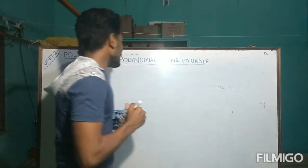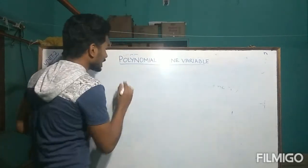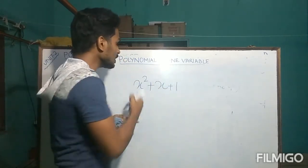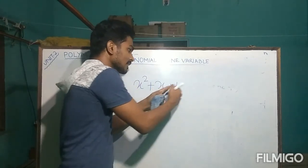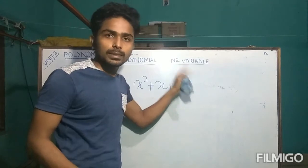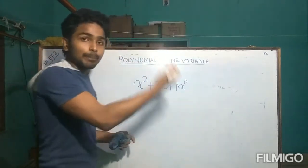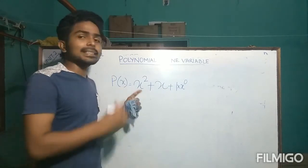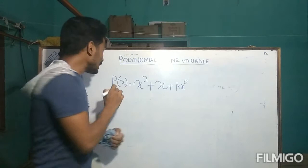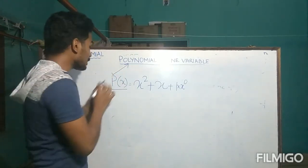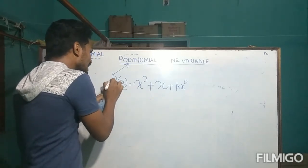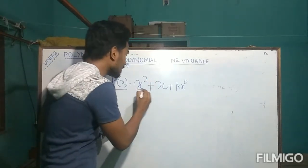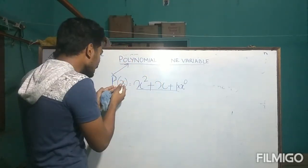Another thing to remember: for a polynomial in one variable, a polynomial is always written as P(X). For example, X² + X + 1 is a polynomial in X, so we write it as P(X). Here P means polynomial, the bracket means 'of', and X means the polynomial is expressed in terms of X. That is why we write it as P(X).